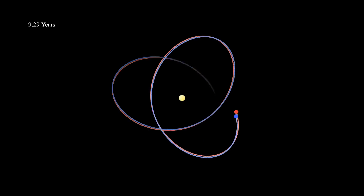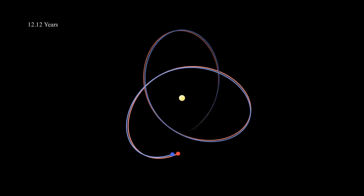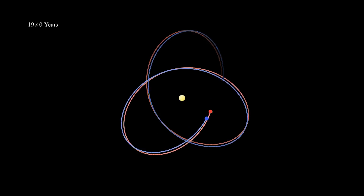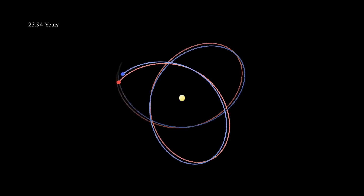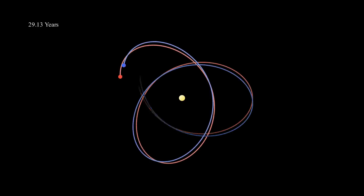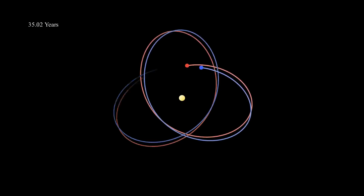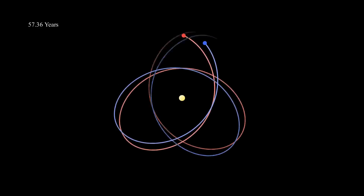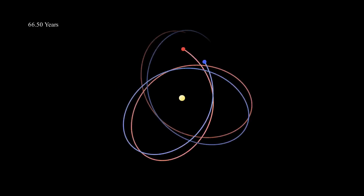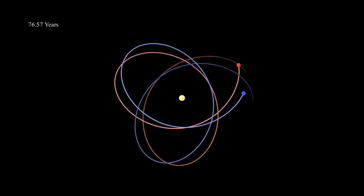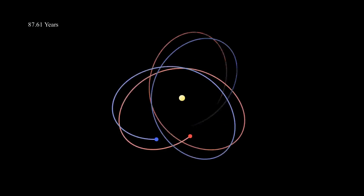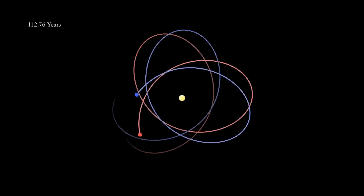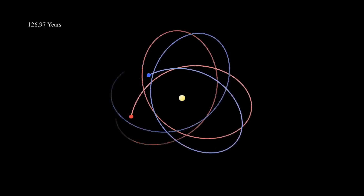But notice what it's not doing — it's not falling into the sun or flying out of the solar system entirely. That's because even though it's not a closed orbit, it's still a bounded orbit. It still stays between predictable inner and outer limits.